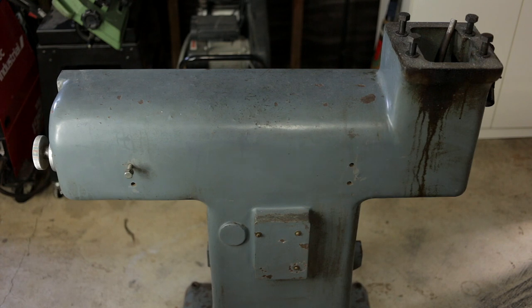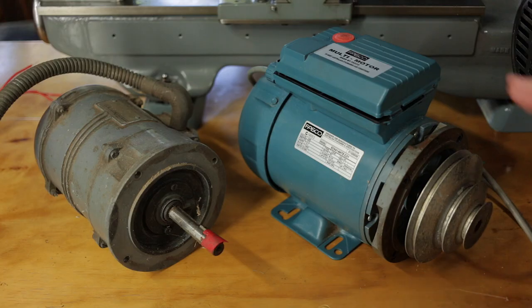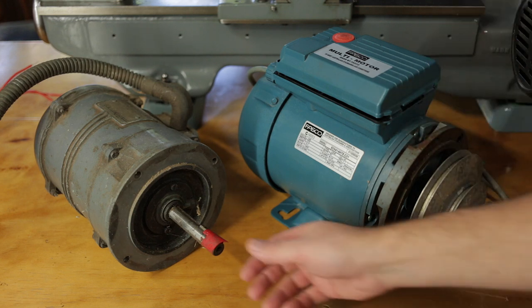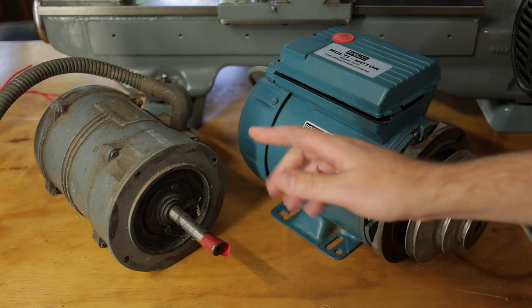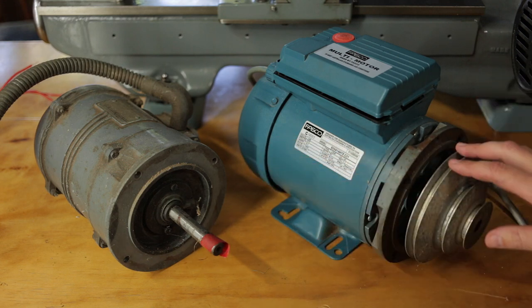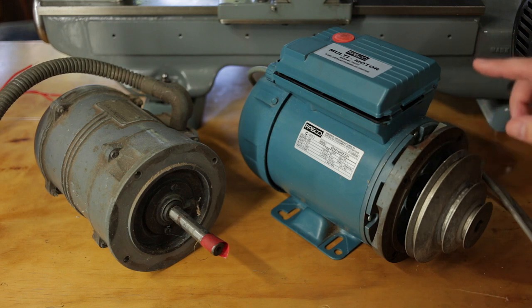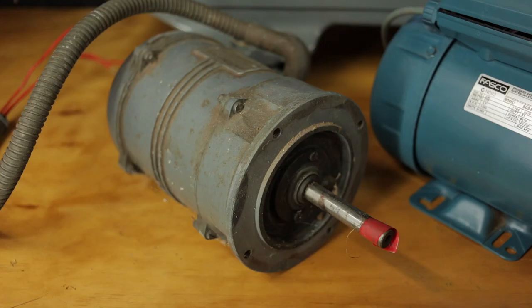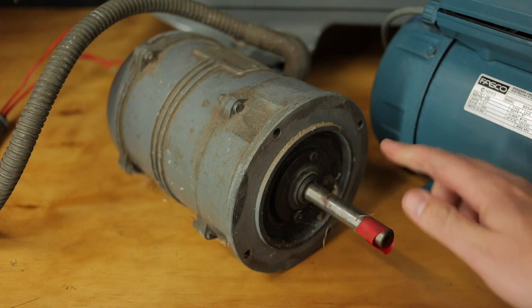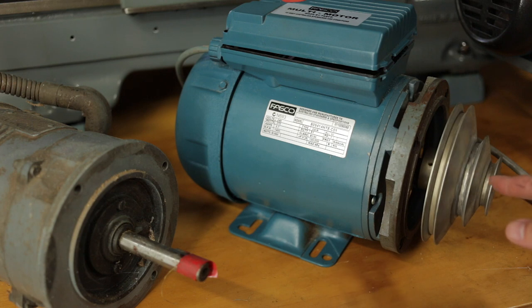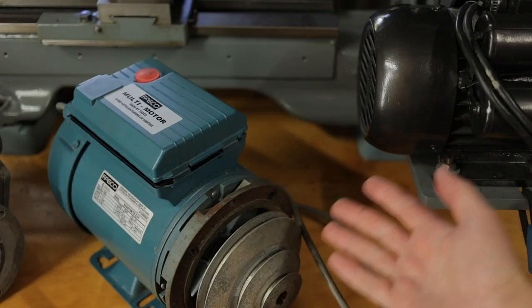This is a pantograph engraving machine. Sort of. And here are two pantograph engraving machine motors. This is a three-phase motor that would have originally been fitted to the pantograph. This is a virtually brand new single-phase motor that the previous pantograph owner fitted, so he could run it at home. And I'm leaning towards putting this guy back onto the pantograph, which means this guy is a spare motor.